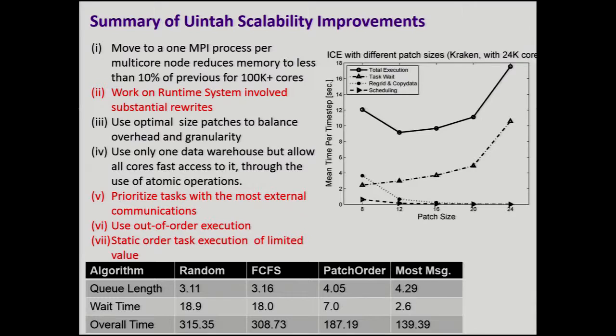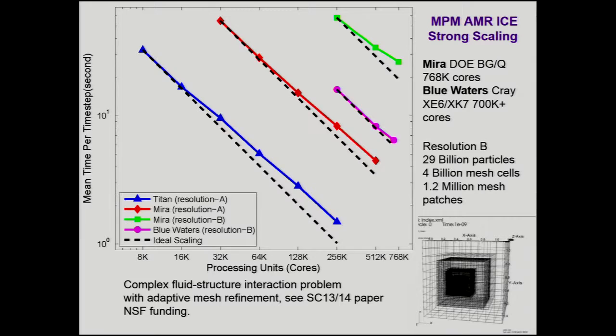Does this work? We have a fluid-structure interaction example — a blob of material moving through a fluid with an adaptive mesh around the blob. We see scaling on Mira running out to the full extent of Mira, off a little bit at the end but still pretty good. Blue Waters shows quite a bit better performance because of the faster cores. We also have results for Mira with coarser resolution and just the CPU cores on Titan. We have a whole bunch of results like this.